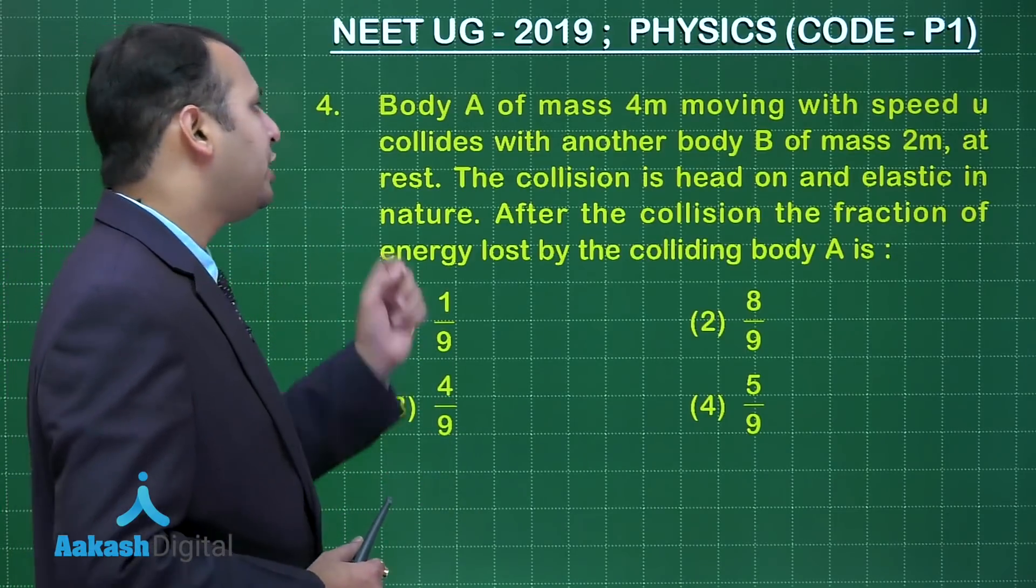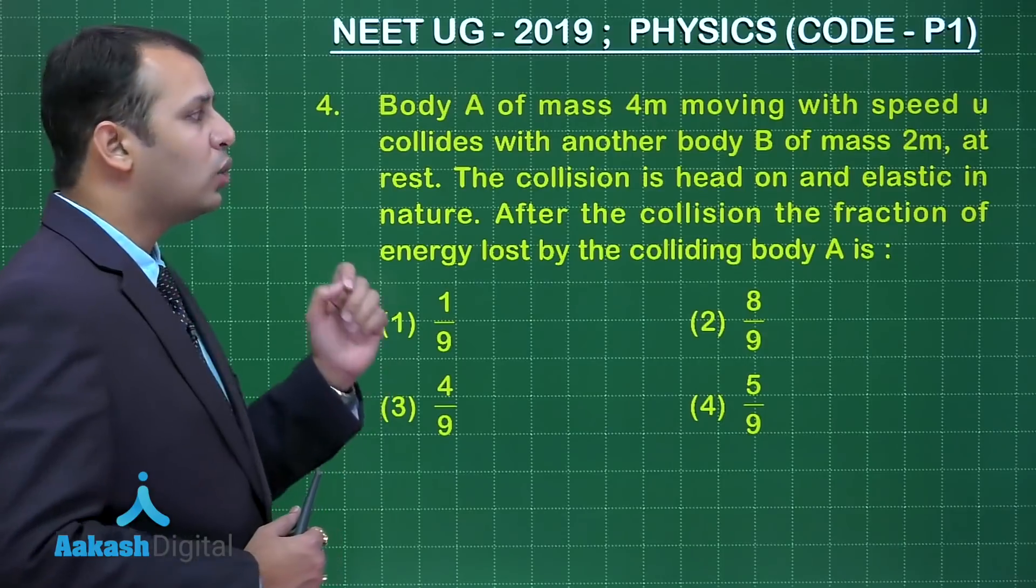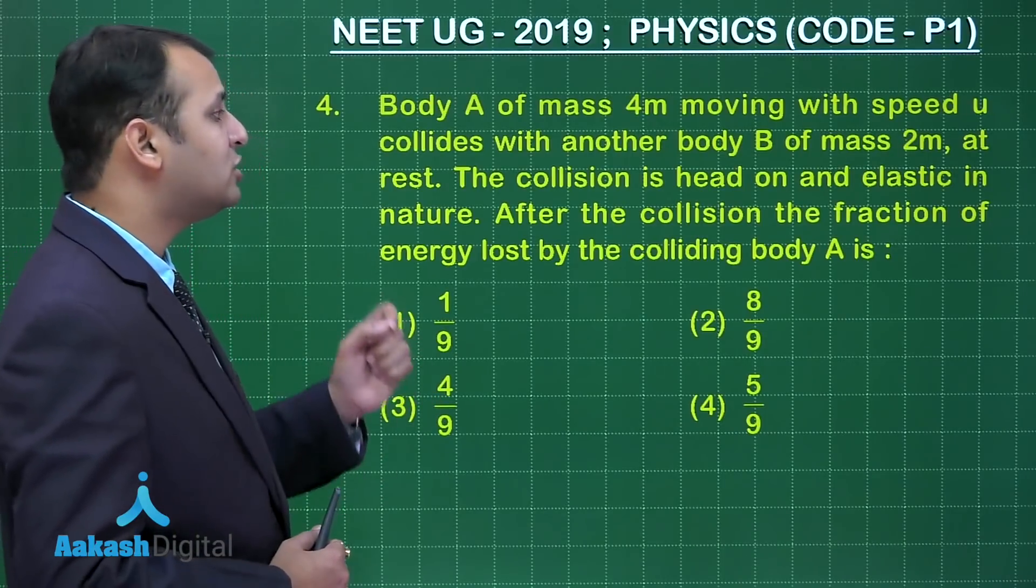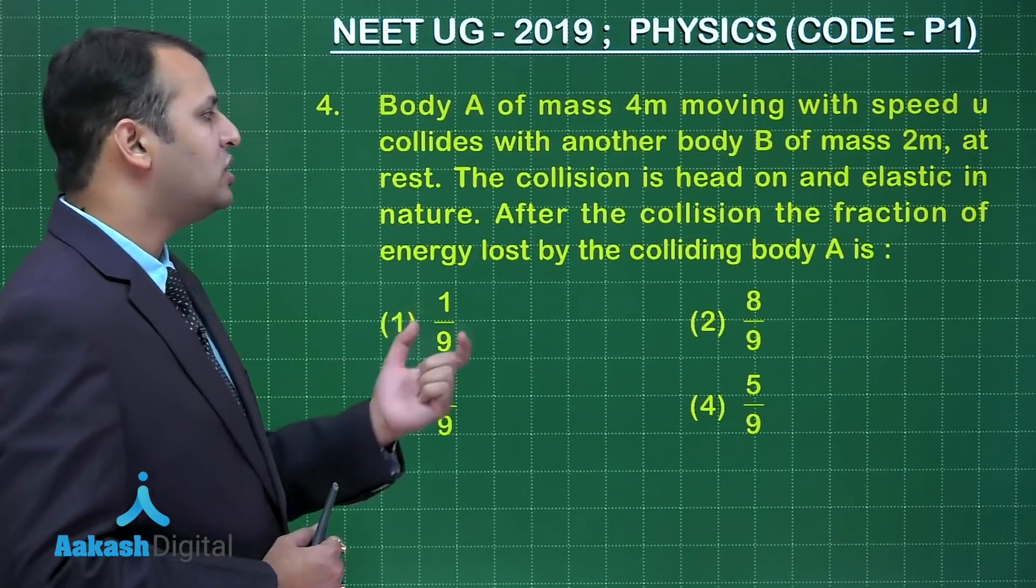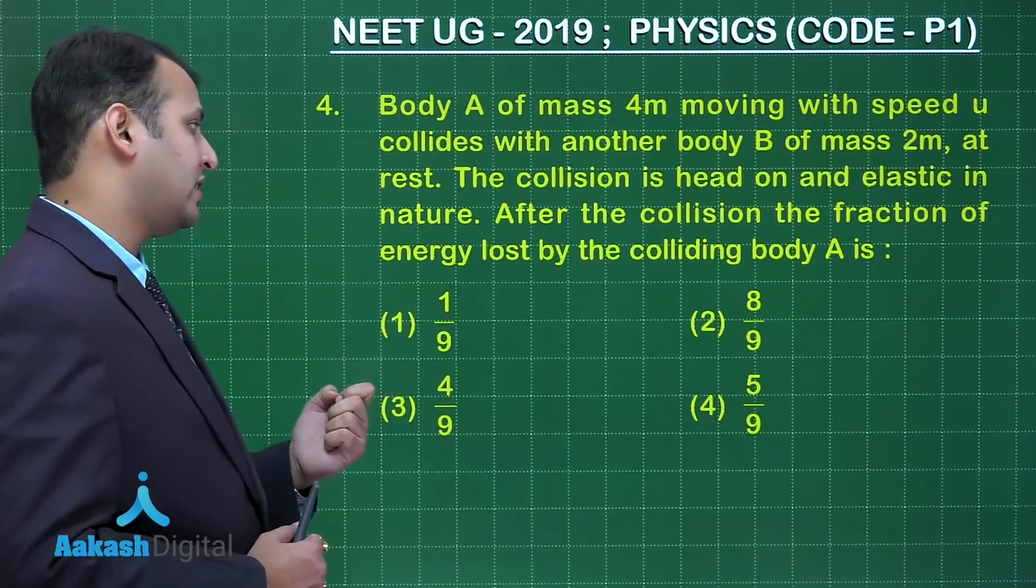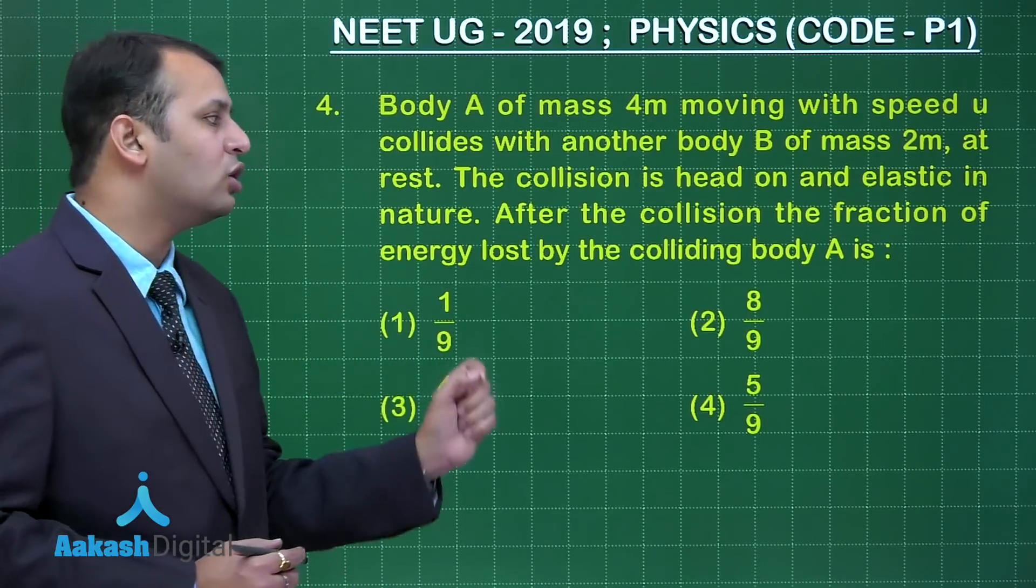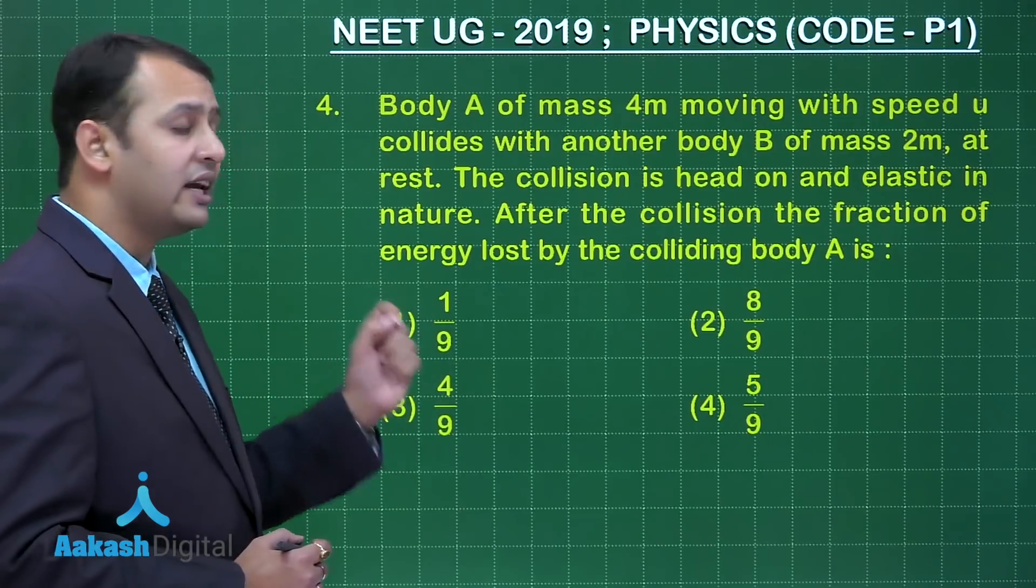As per the question, a body A of mass 4m moving with speed u collides with another body B of mass 2m at rest. The collision is head-on collision and elastic in nature. After the collision, the fraction of energy lost by colliding body A is: